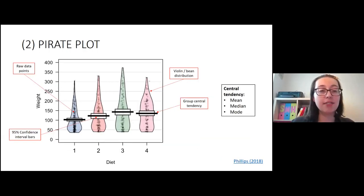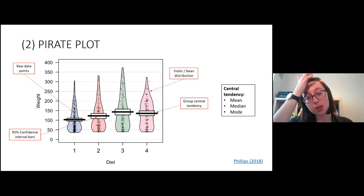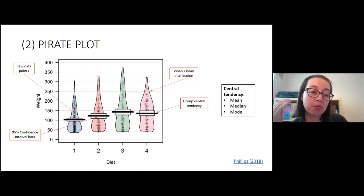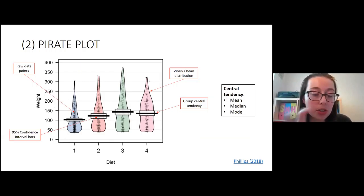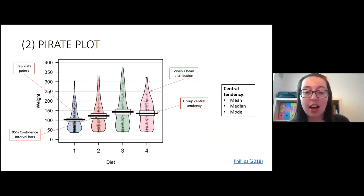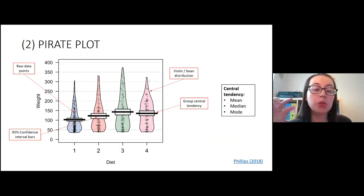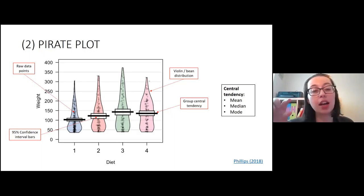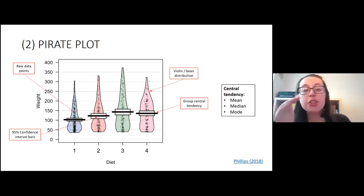The second alternative is a pirate plot. Pirate plots are powerful because you need relatively minimal code to show a lot about your data. A pirate plot includes a group central tendency measure (the black line — you can set this to mean, median, or mode), boxes around it showing 95% confidence intervals, raw data points that look like bubbles, and the violin or bean distribution showing the probability of the distribution.